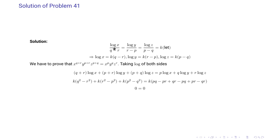We take the equality of the given ratios and let that ratio equal k. So log x becomes k(q minus r), log y becomes k(r minus p), and log z is equal to k(p minus q).